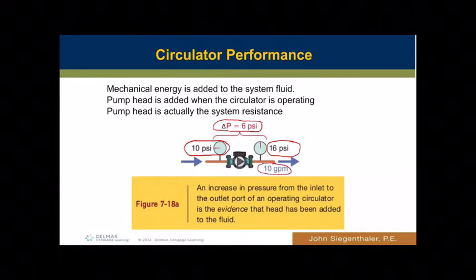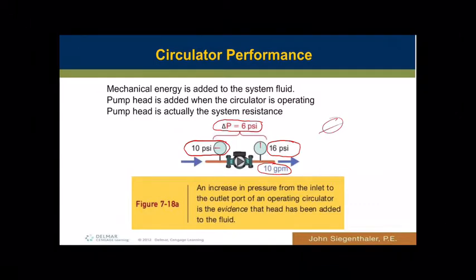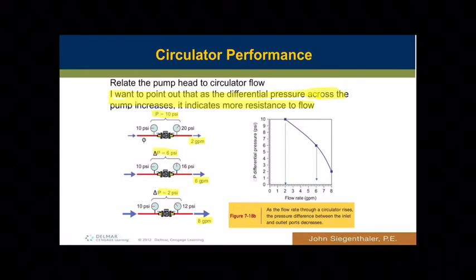In this example, we have 10 gallons a minute against a pressure drop of 6 PSI. The 6 PSI is what the pump is actually creating for pressure — that's the only correlation between GPM and flow, and that's unique to every system. It's evidence that the pump is operating, that energy is being added. If the pump weren't running, we'd get zero pressure drop.